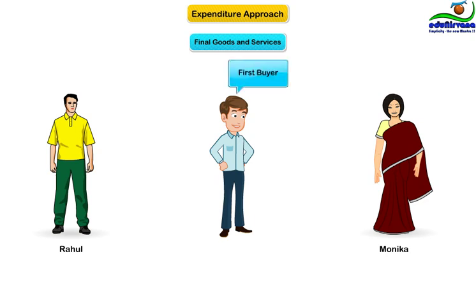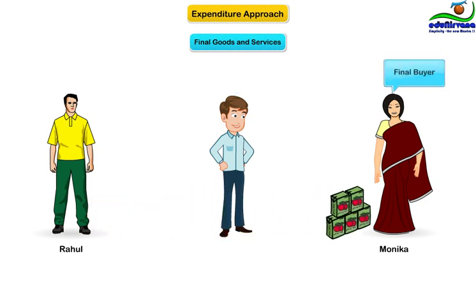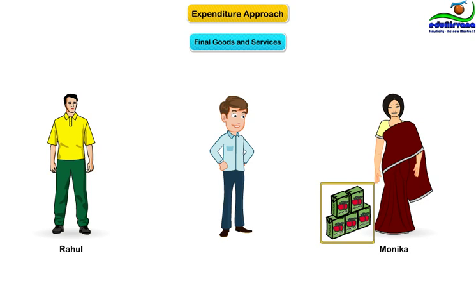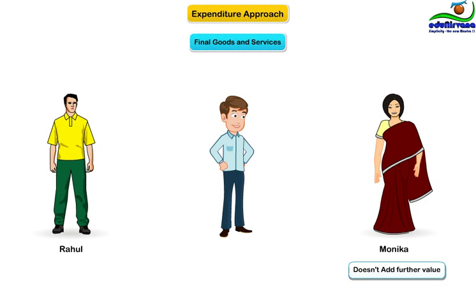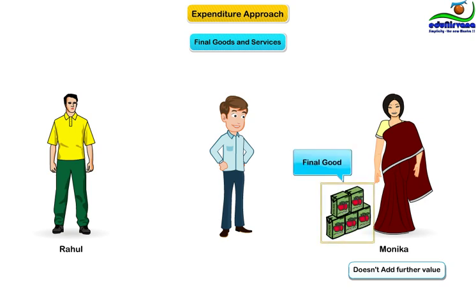Think of buyers at each stage of value creation. The first buyer in our simple economy was Vijay — he bought apples from Rahul. The second buyer was Monika, who bought the apple juice from Vijay. Monika is the final buyer in this economy. She is the final user, the ultimate consumer, and she is consuming the final product, which is apple juice. She doesn't add any further value to it and doesn't sell to another person. The good that she buys is the final good.